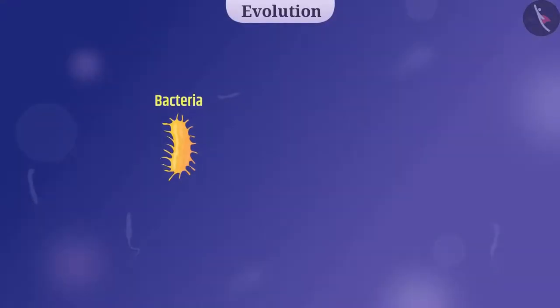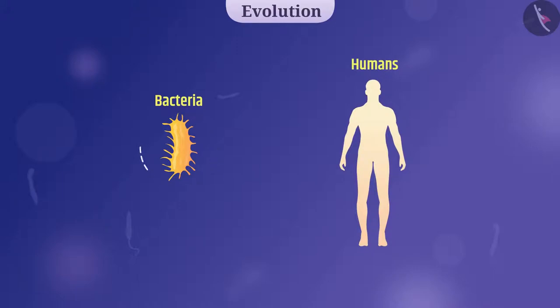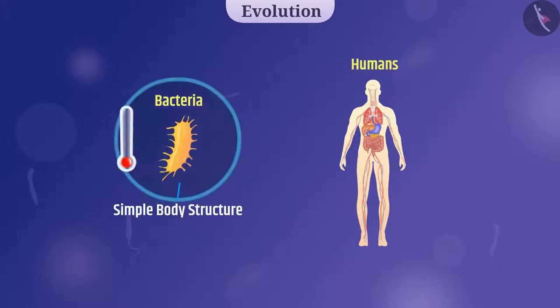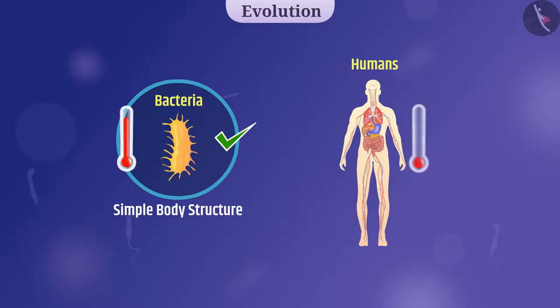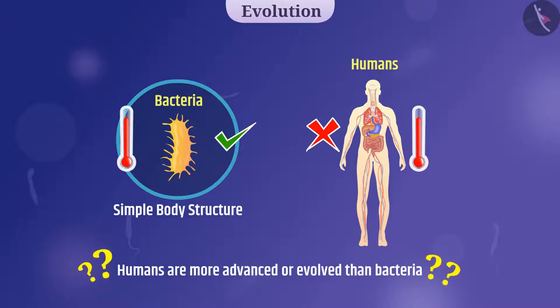For example, bacteria are ancient creatures as compared to humans. Bacterial body structure is much simpler than human body structure. But bacteria can survive in extreme heat. However, humans can't. So, would it be fair to say that humans are more advanced or evolved than bacteria? Discuss this with your friends.